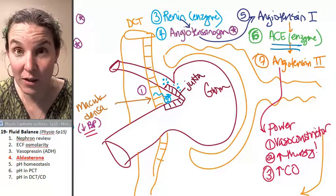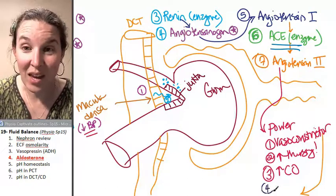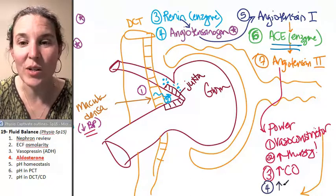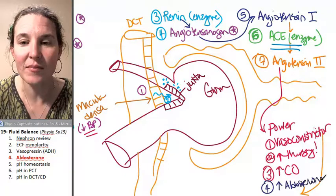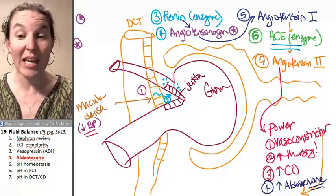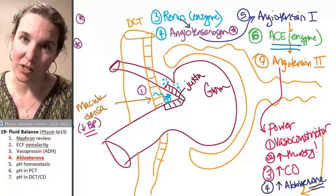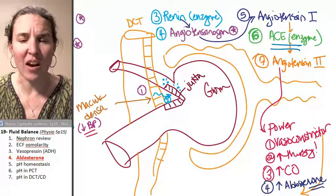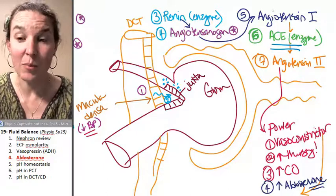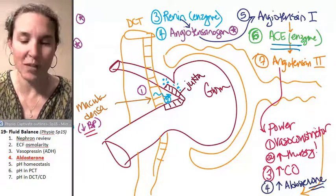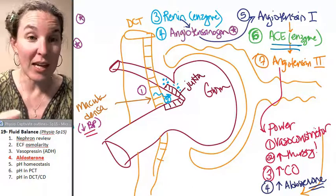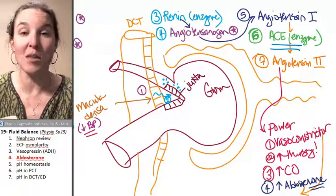The fourth thing that angiotensin 2 does is it increases aldosterone production. So if you have low blood pressure one of the responses is to produce aldosterone. Now, there is nothing simple about this. In fact, one of the textbooks that I was reading just said that this is one of the most complicated interactive pathways in the body.